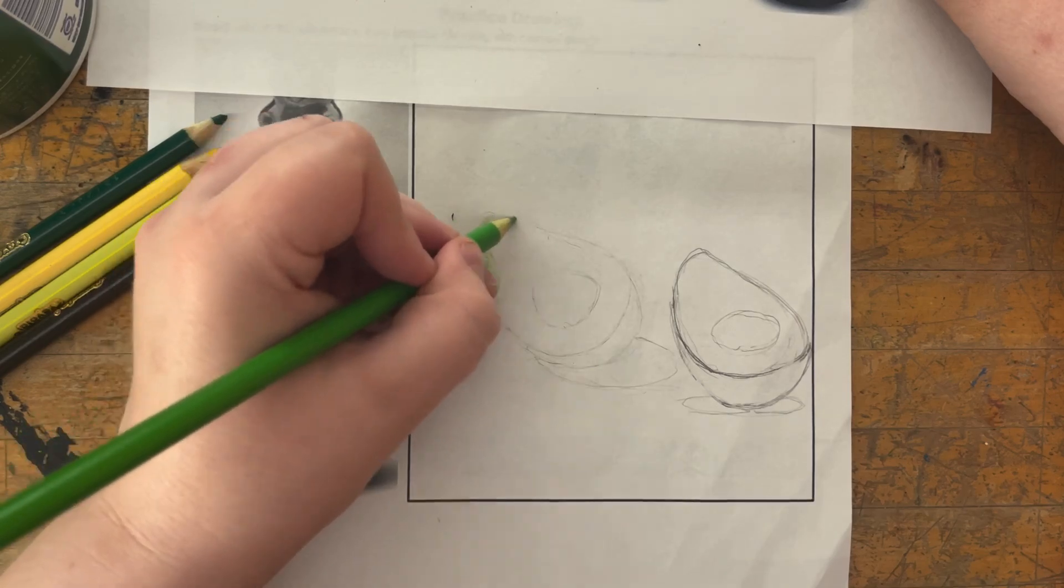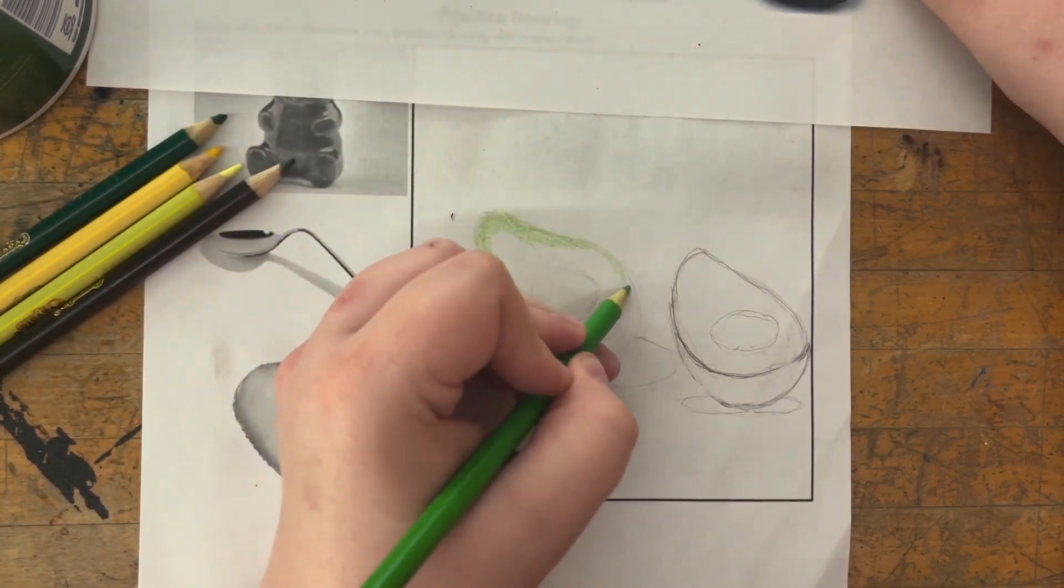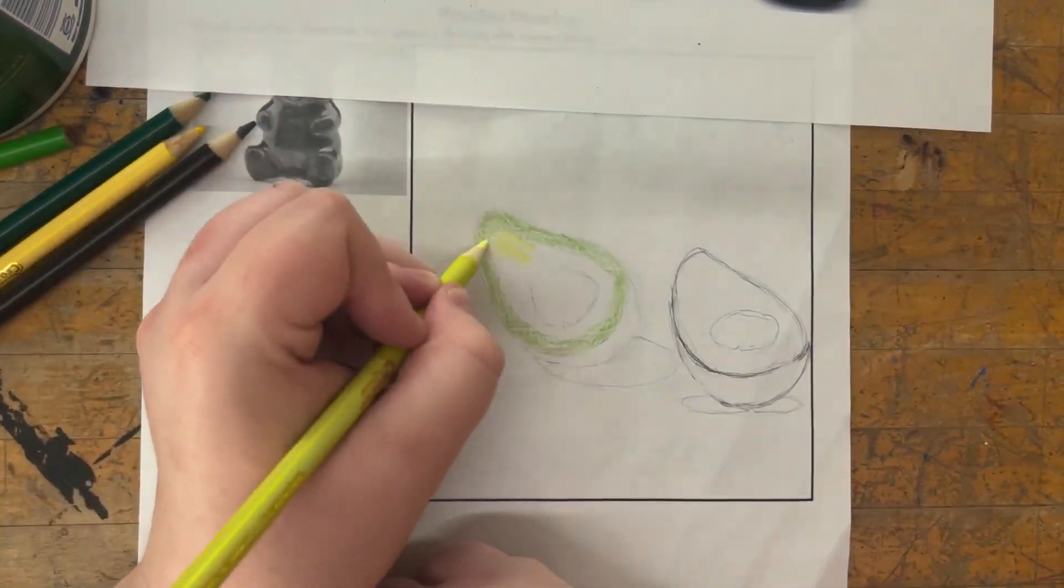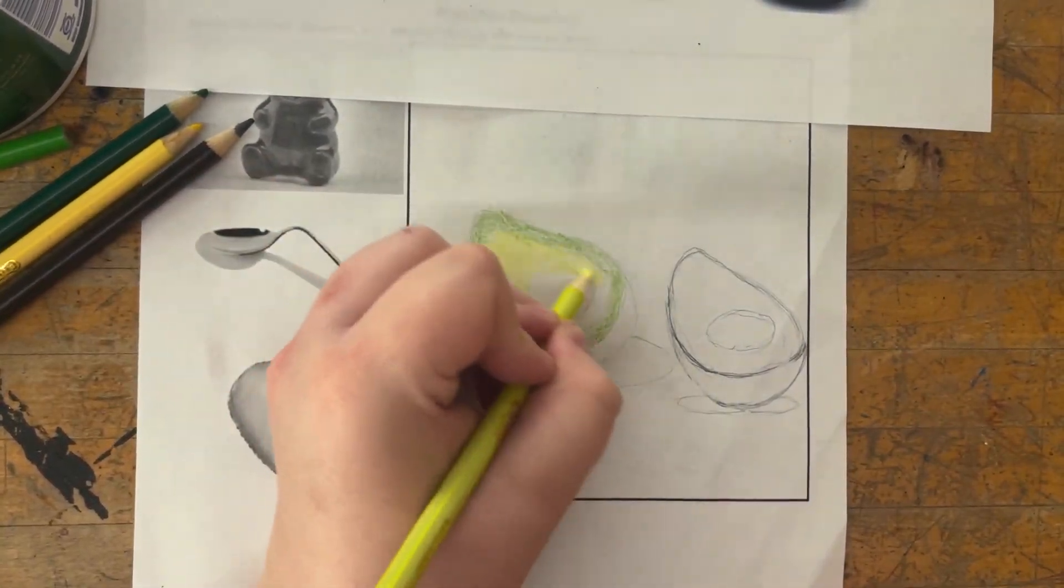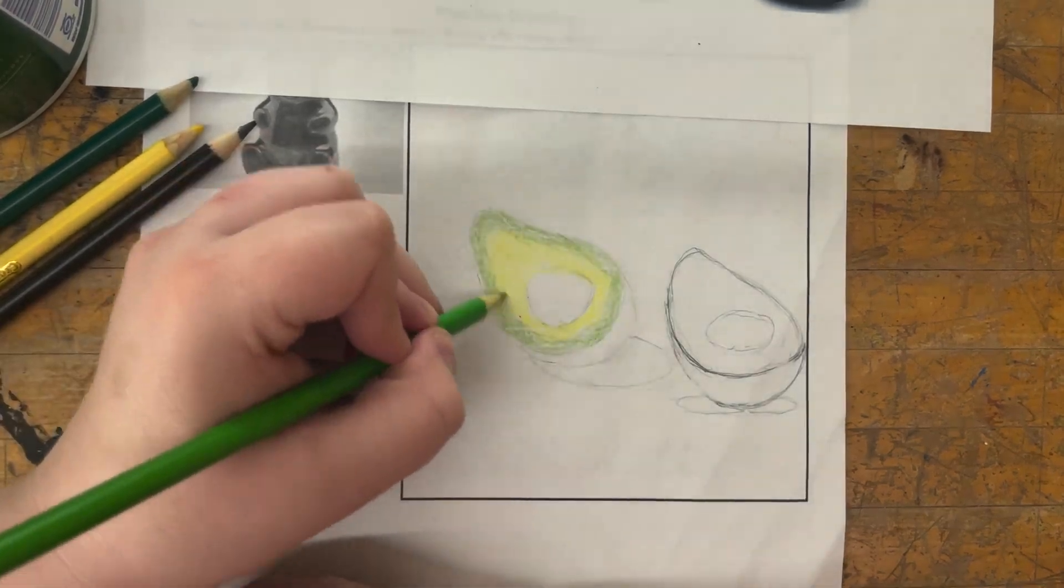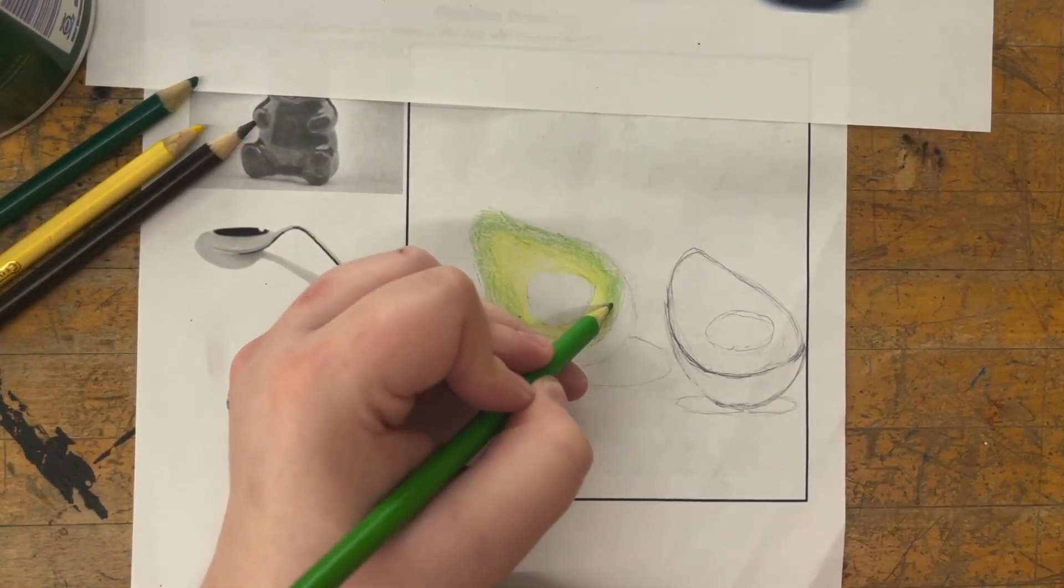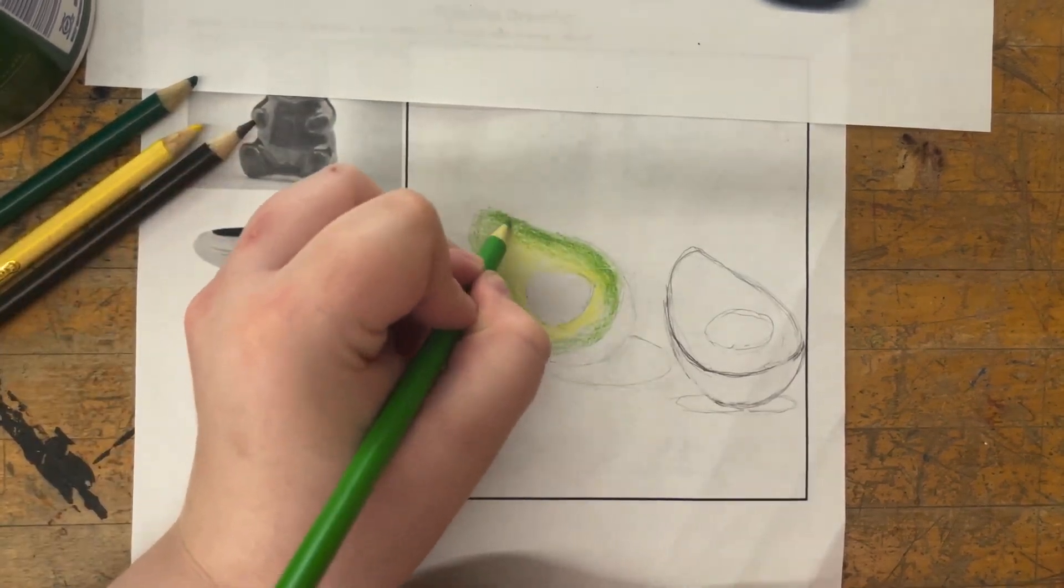If the subject isn't 100 percent accurate to the reference, that's fine. I would rather have you focus on the overall blending, shading, and showing me that you understand and you're seeing those transitions in color, shadow, and light in the reference itself.